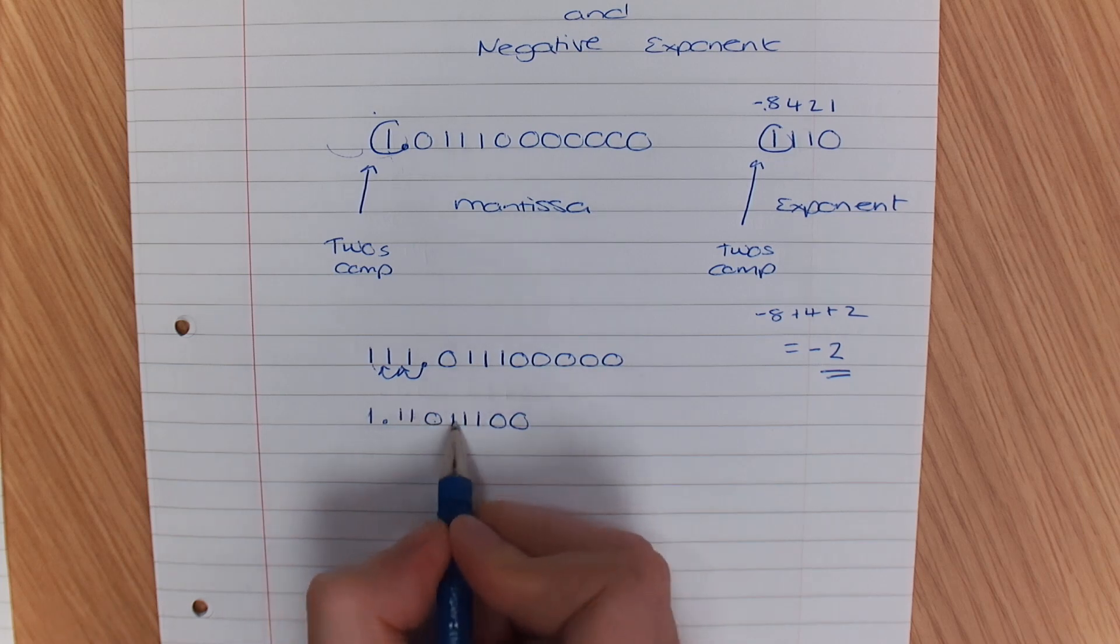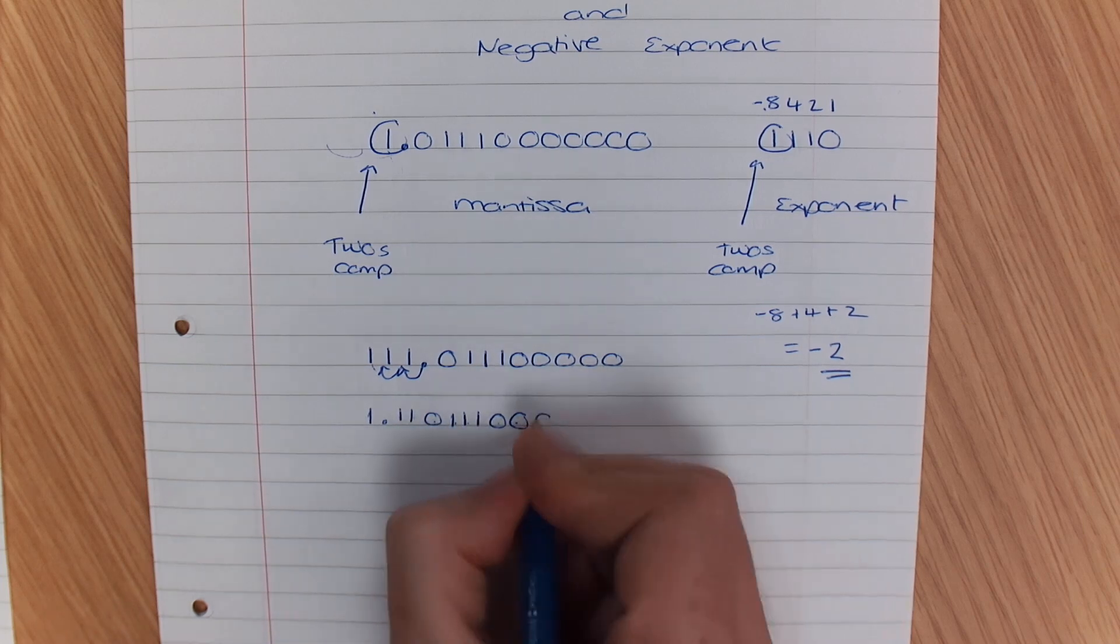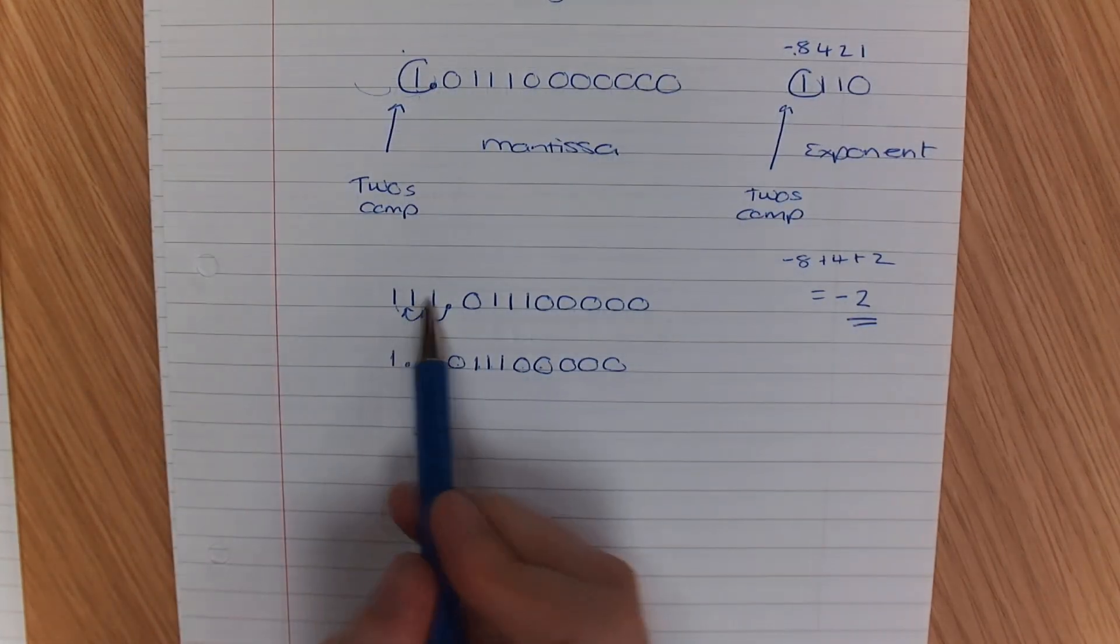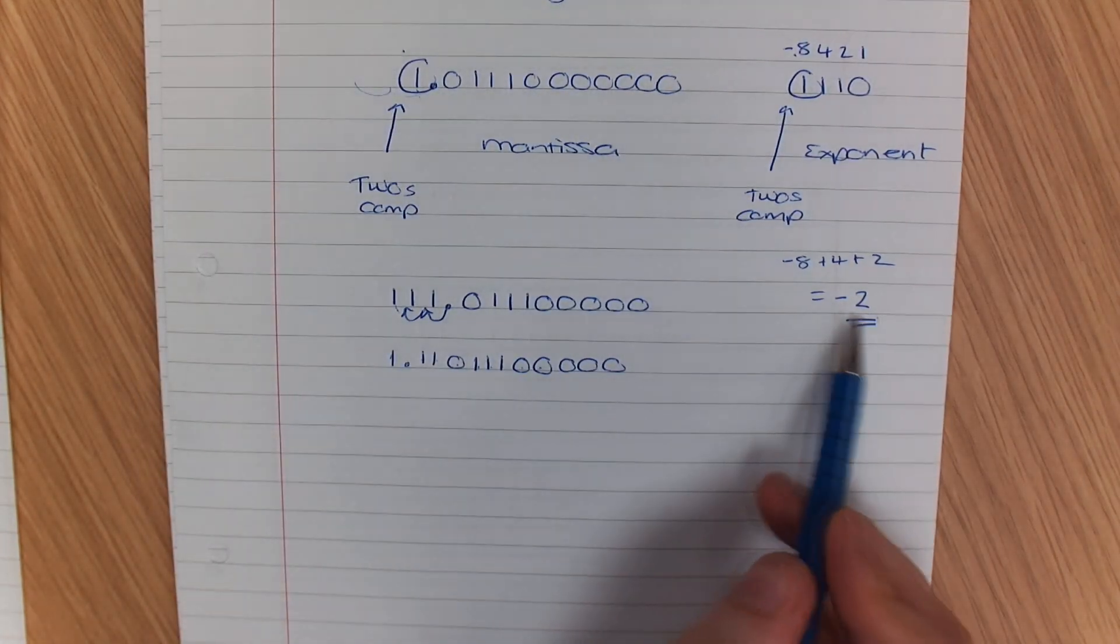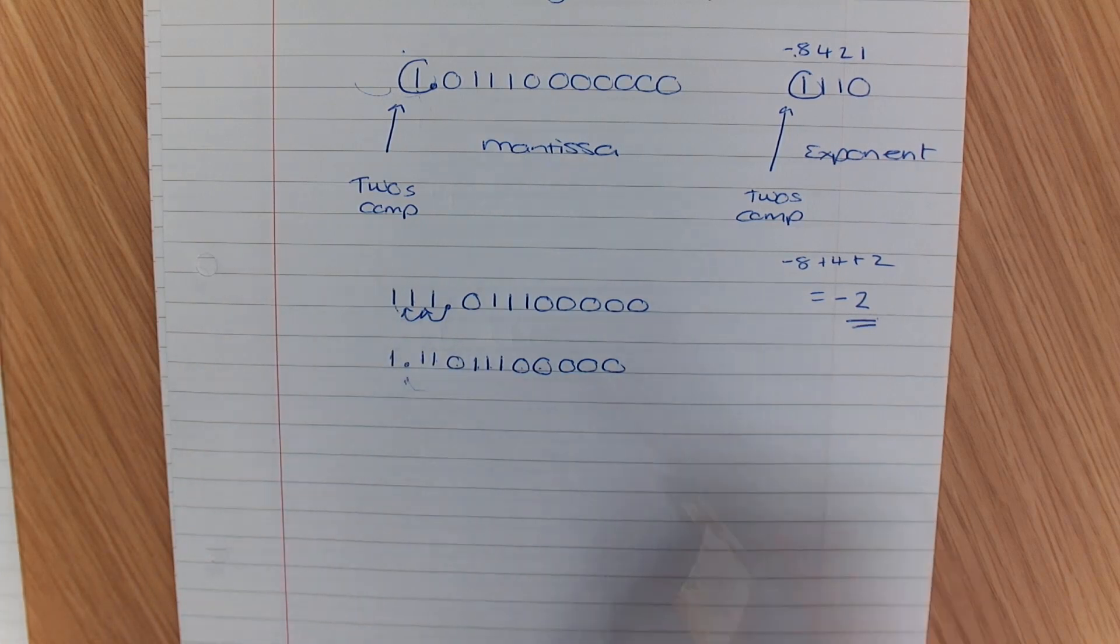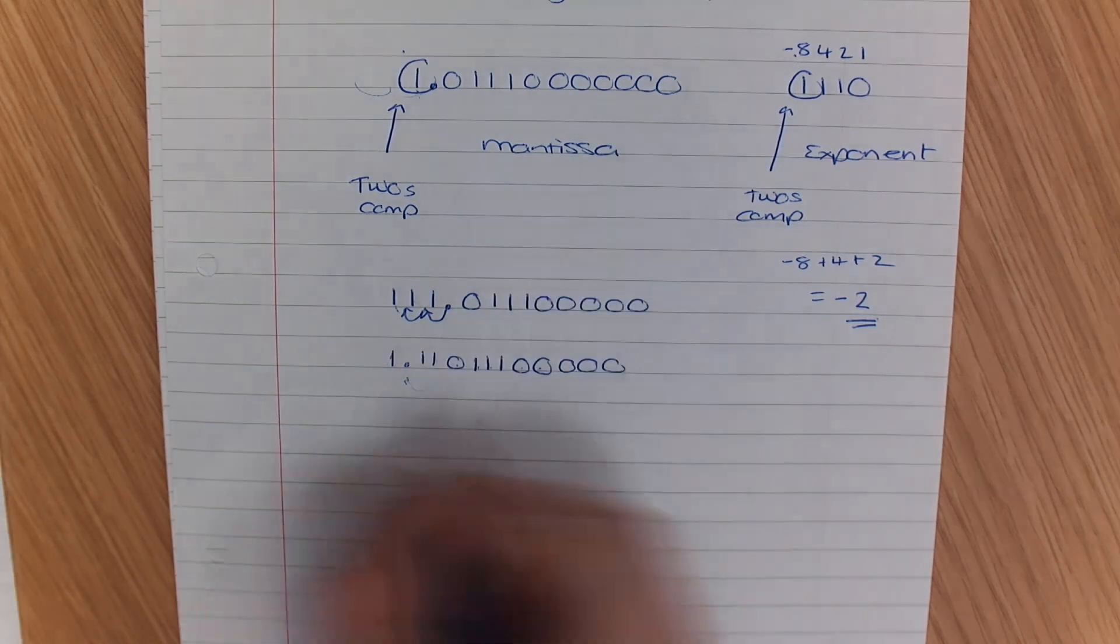So we've got 1, 2, 3, 4, 5, 6, 7, 8, 9, 10, 11, 12. So you can see what I've done there. I've padded it with 2 ones, then moved the decimal place.